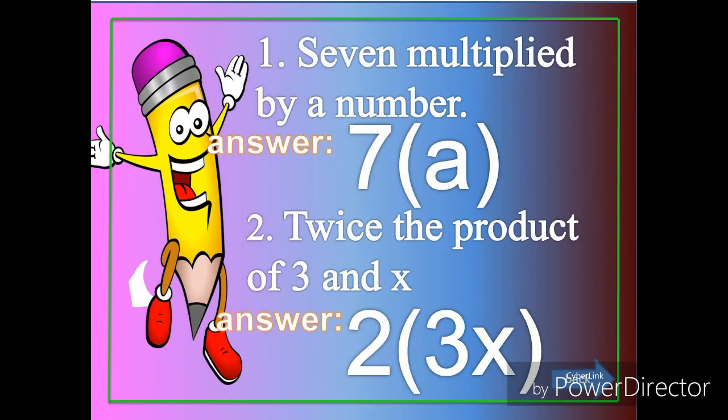Let's have this one: seven multiplied by a number. So seven means we have the number 7. And then multiplied means we're going to use the symbol of multiplication. And then we're going to change the word a number to a variable, which is letter a. Then we have 7 times a.